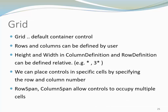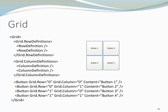We can place controls in specific cells by specifying the row and column number. The properties RowSpan and ColumnSpan allow us to place controls so they span over multiple cells. Here is an example that demonstrates how controls are placed inside a grid. Notice we have a row definition — in our case, two rows — and a column definition with two columns. We didn't specify any absolute row height nor did we use the star notation. Because of that, all four areas have equal size.